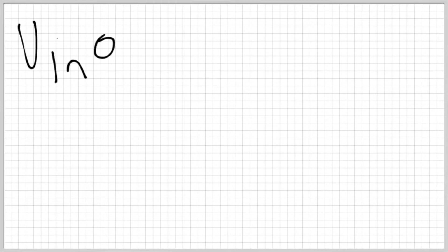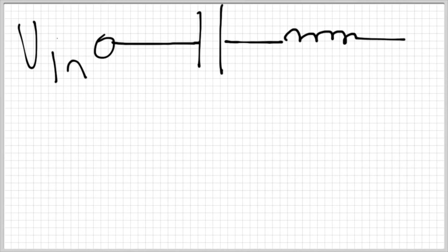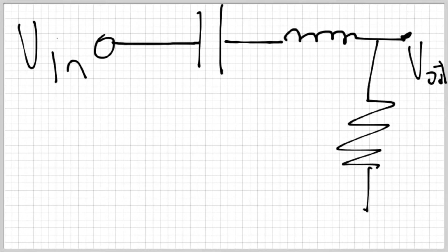In this circuit configuration, V-in goes through a capacitor and inductor in series, and V-out is taken between those components and a resistor that goes to ground. In this configuration — where the resistor goes to ground and the capacitor and inductor come first with respect to V-in — this is going to be a bandpass filter.